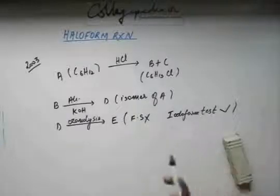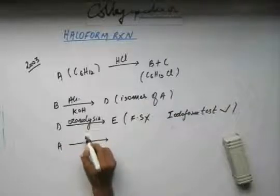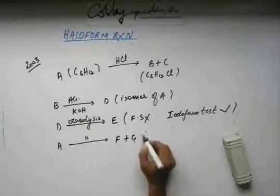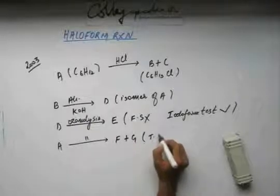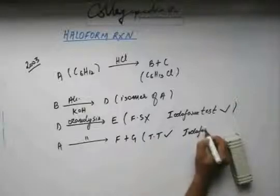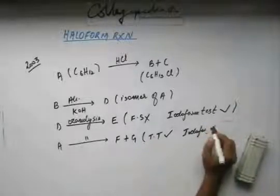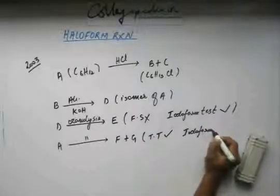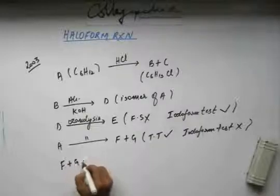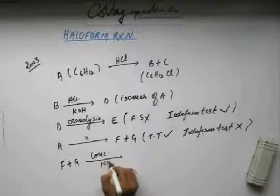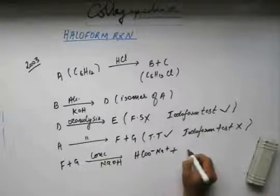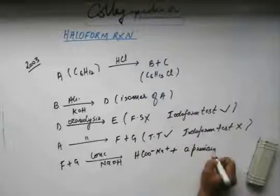And also A when undergoing ozonolysis gives F plus G. Now about F and G it's given that both give positive Tollins test and iodoform test is negative for them. And again F plus G when you add concentrated NaOH on them you get sodium salt of formic acid plus a primary alcohol.